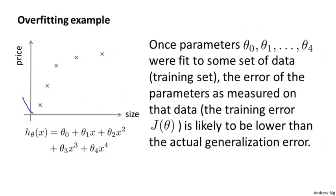We've already seen the problem of overfitting, in which just because the learning algorithm fits a training set well, that doesn't mean it's a good hypothesis. More generally, this is why the training set error is not a good predictor for how well the hypothesis will do on new examples. If you fit parameters theta zero, theta one, theta two, and so on to your training set, the fact that your hypothesis does well on the training set doesn't mean much in terms of predicting how well it will generalize to new examples not seen in the training set.